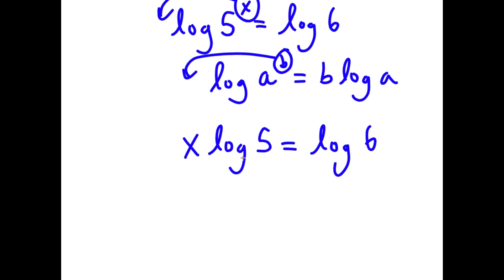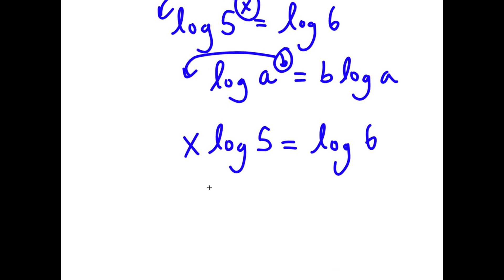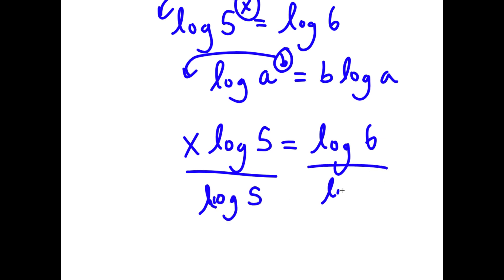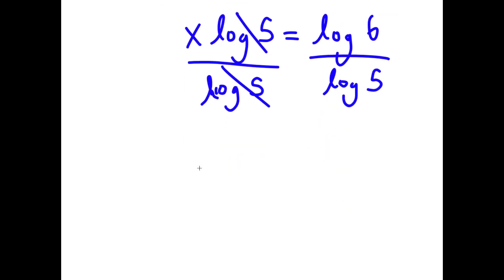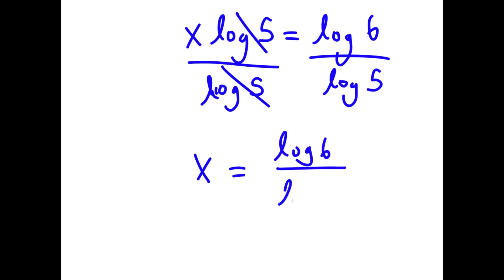Now I'm going to divide both sides by log 5 because we want to isolate x. These two cancel out, and I'll have x is equal to log 6 over log 5.